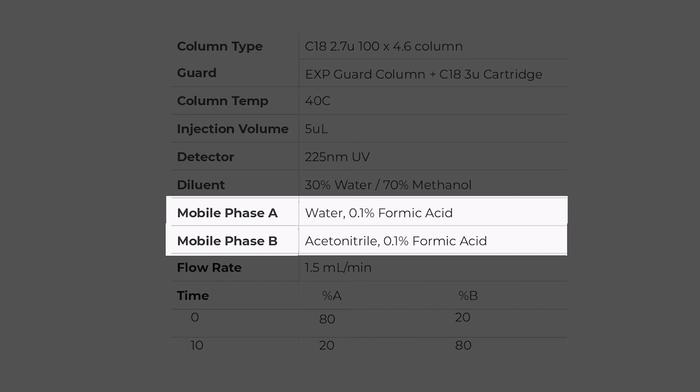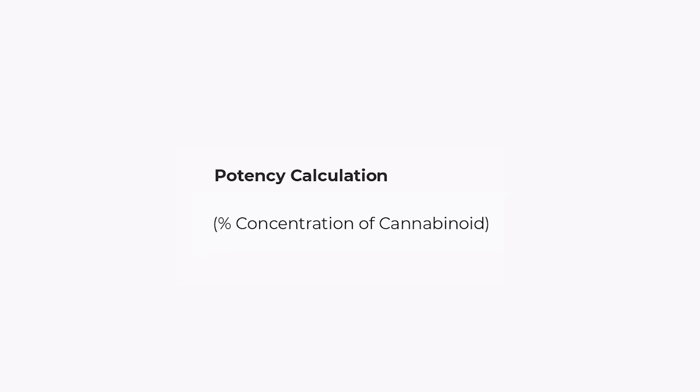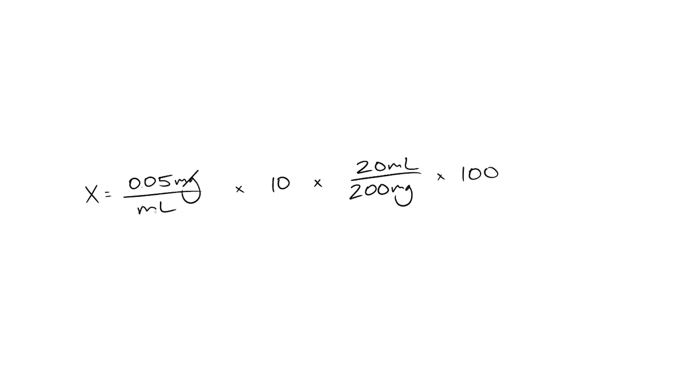Let's calculate the percent concentration of cannabinoids in the sample. Our sample concentration of this compound is 0.05 mg per ml. Our dilution factor was 10-fold because we did 1 to 10 on the second part of the test. Our extraction volume was 20 mils of methanol, and the dry sample weight was 200 mg.